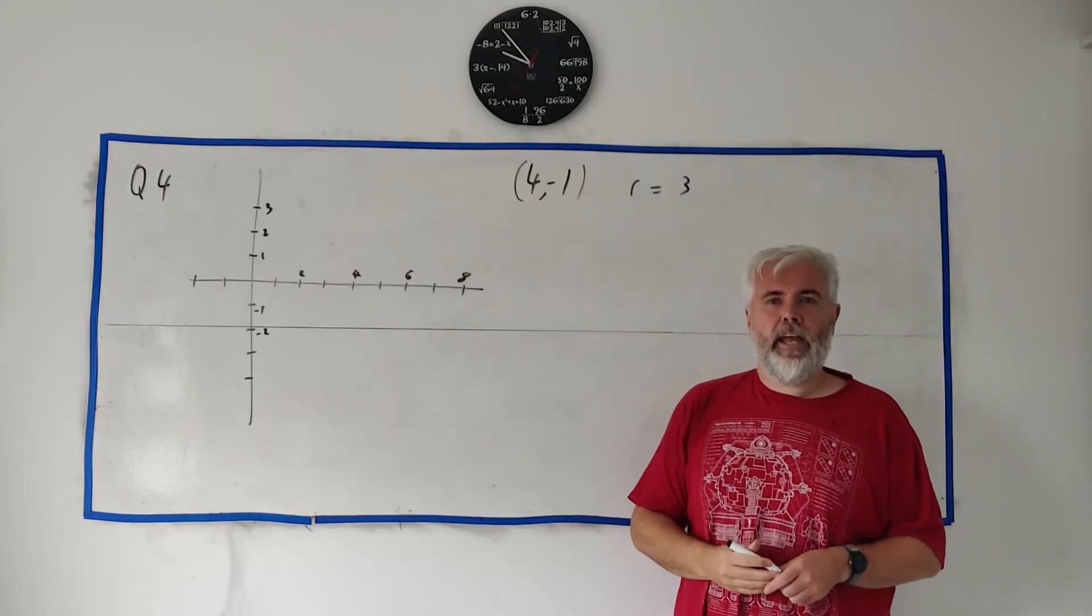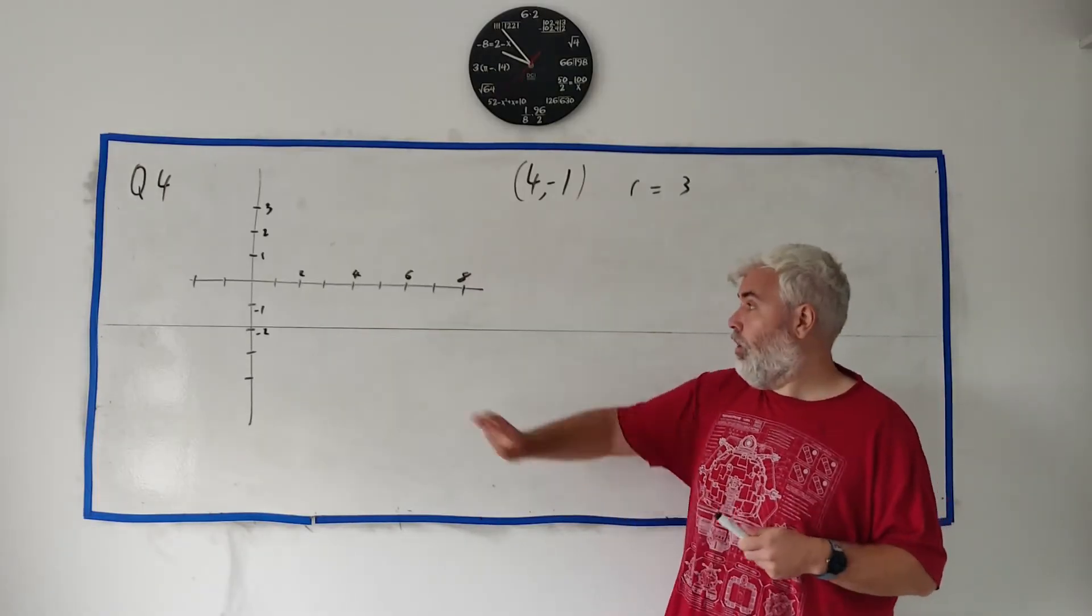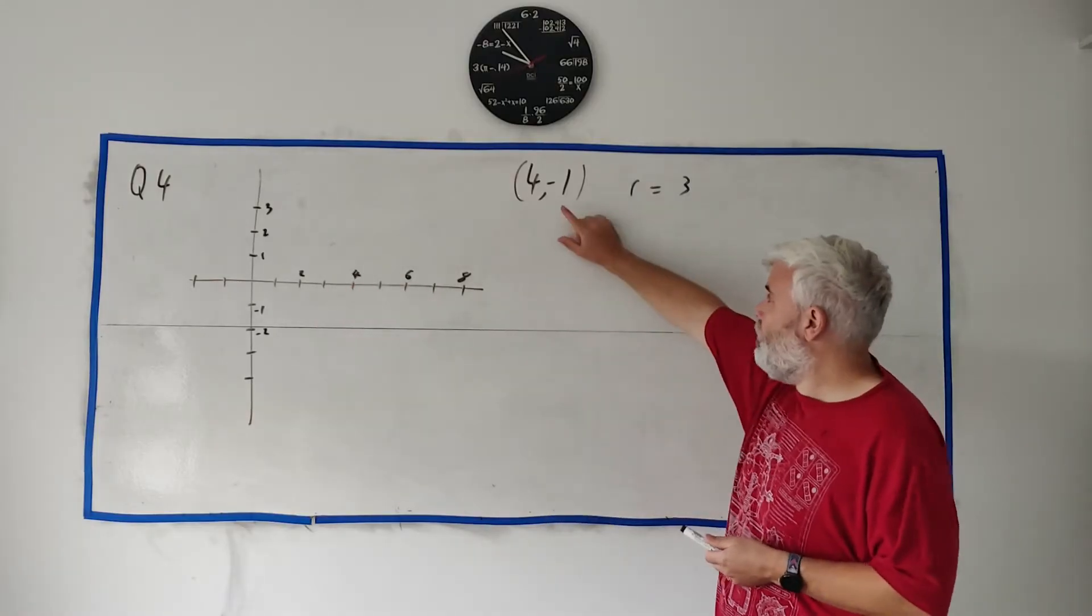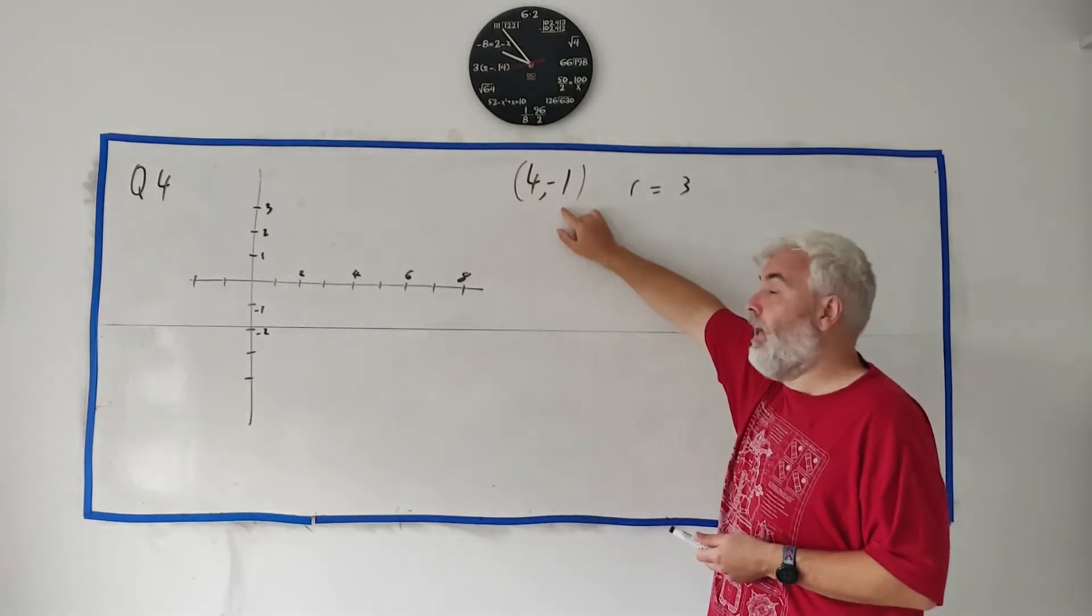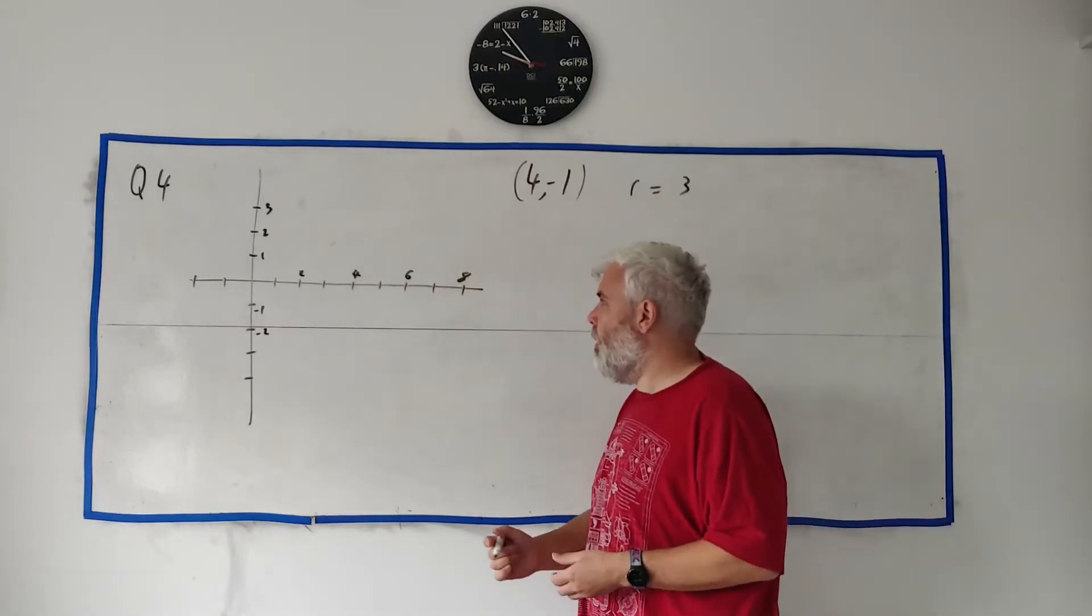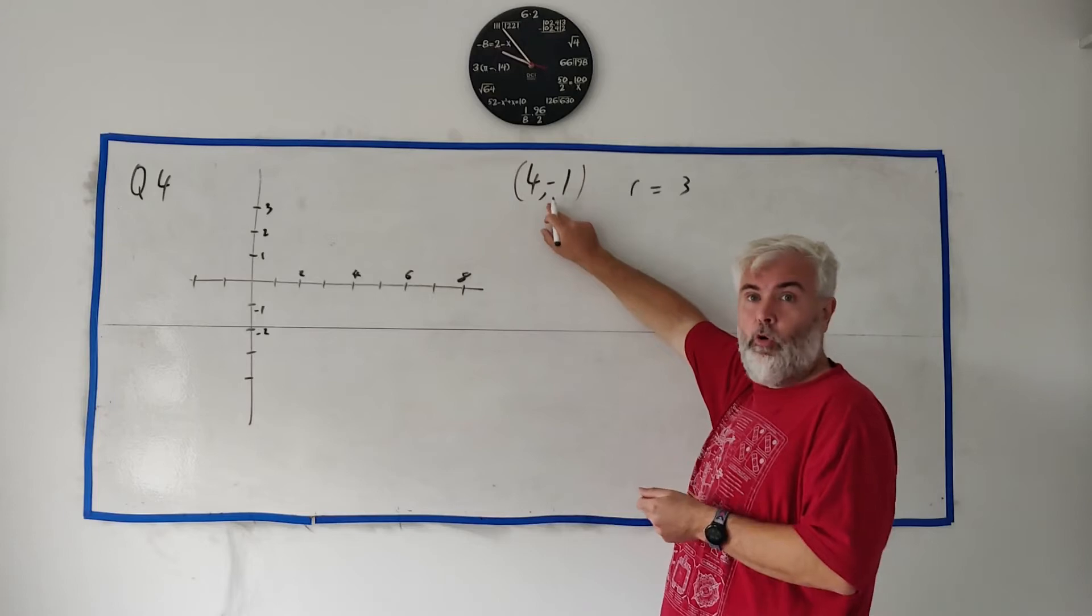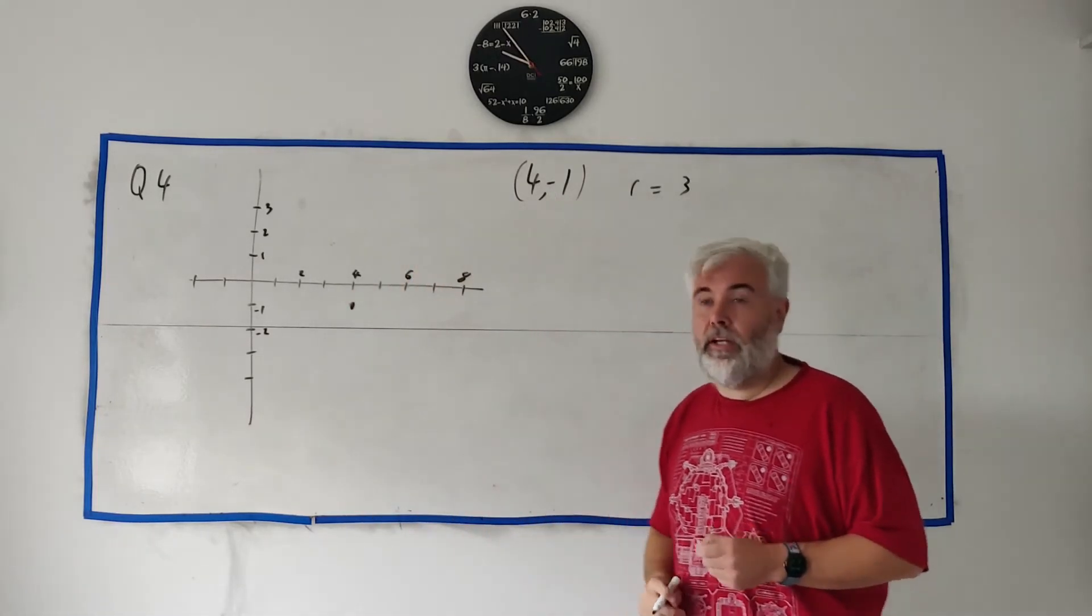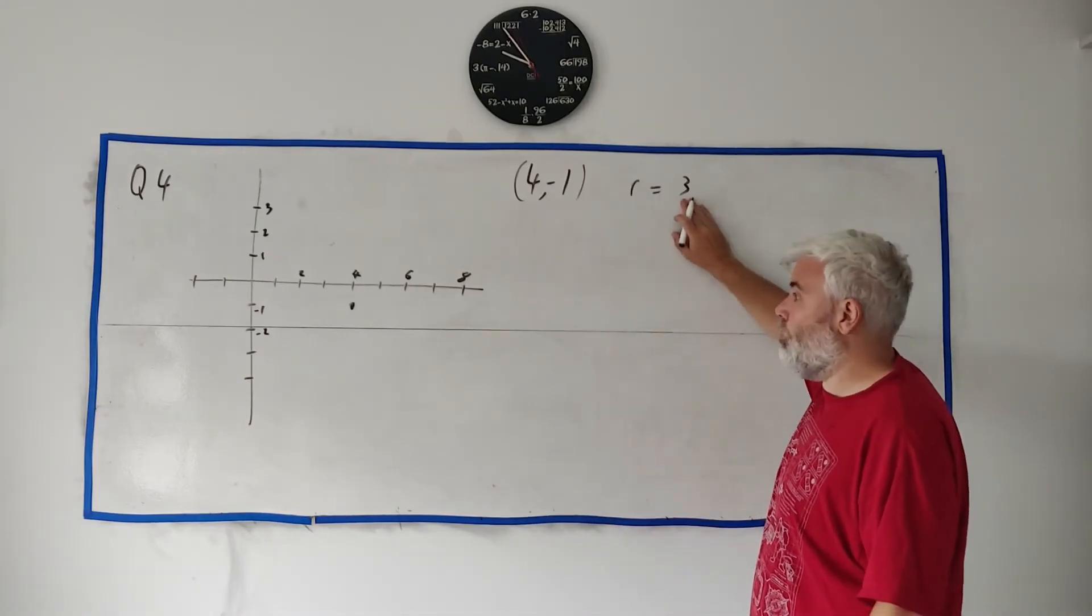In part B, they ask us to construct the circle on the graph they give us that looks roughly like this. They tell us the center of the circle is (4, -1), and they tell us the radius is 3. It's a very straightforward question. We go to the point (4, -1), go to 4, down to minus 1. That's the center of the circle.